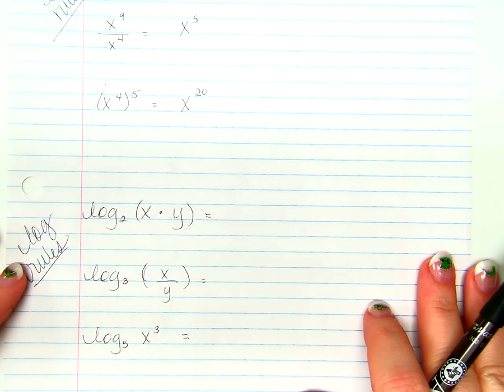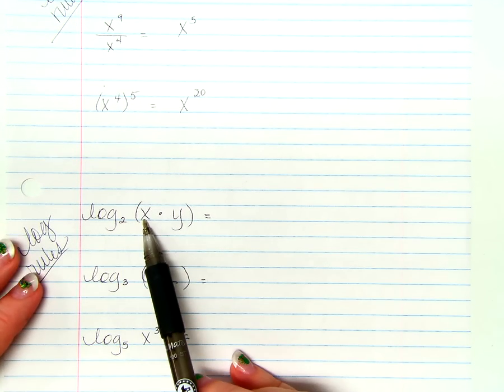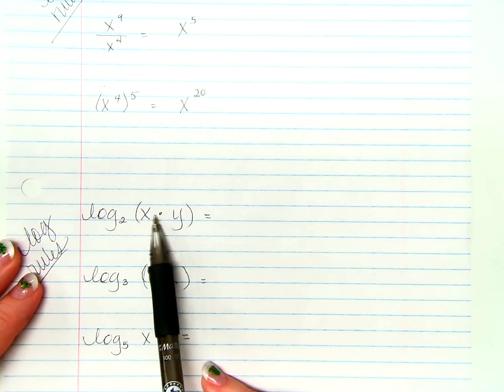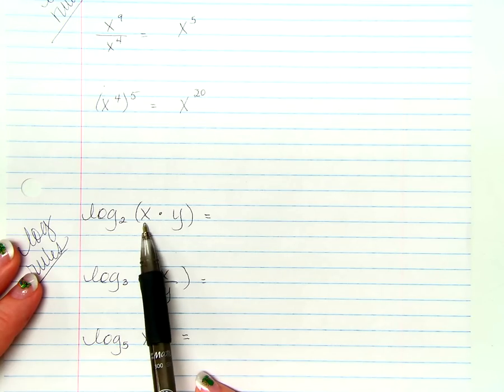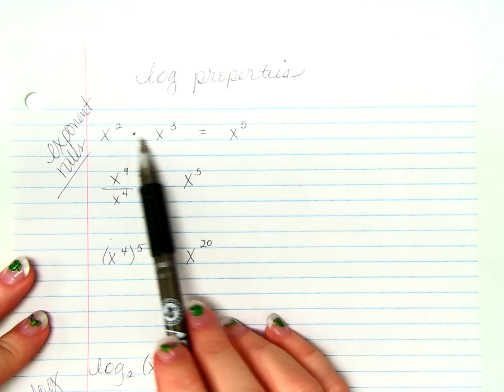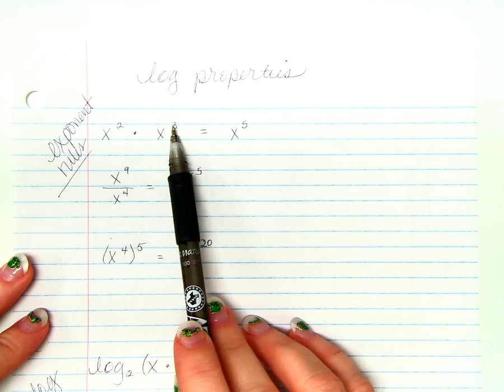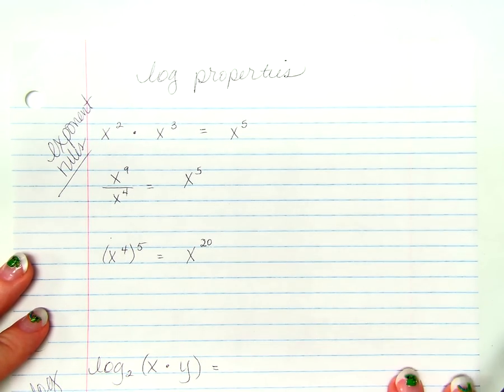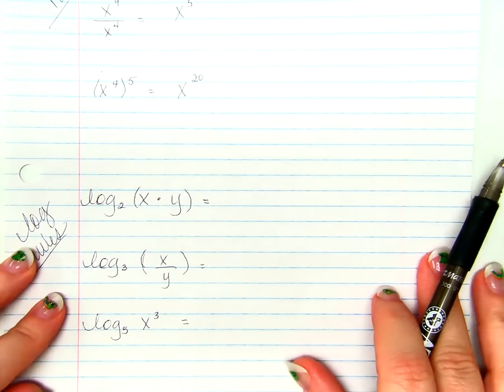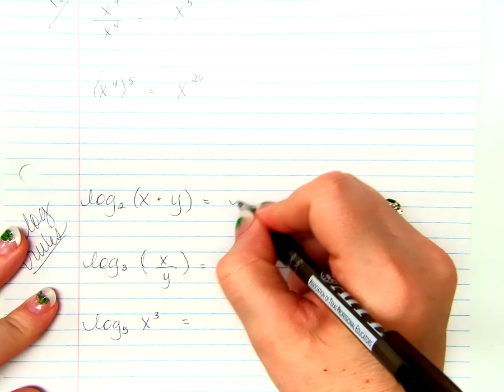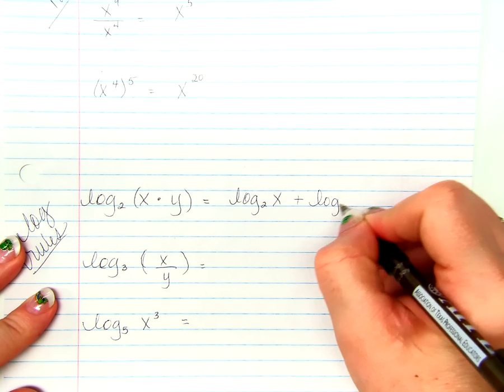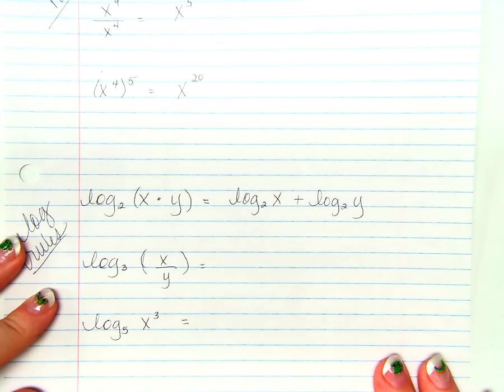So, here are the log properties, the log rules. Log base 2 of x times y. Well, if we are multiplying inside of a log, what are we actually doing with these two numbers? When we were multiplying like bases, what did we do with the numbers? We added. So, if we are multiplying inside of a log, guess what we are actually doing? We are actually adding those two things together.